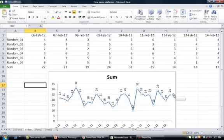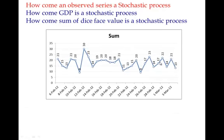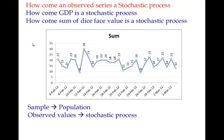Similarly in real life, you get one value of a series — like a GDP value or growth rate — and then you try to understand what kind of stochastic process would have generated this series. The observed values are nothing but a particular outcome of a stochastic process, just as a sample is a particular outcome taken from a population. Thank you.